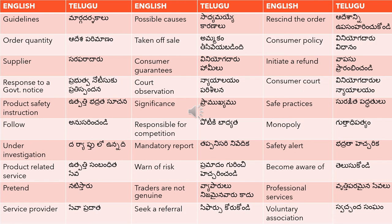'Monopoly' means 'guttidipattya' — that is when only one company tries to take up the whole market share and doesn't let any other company enter that market. 'Under investigation' means 'daryaptulo unnaadi'. 'Mandatory report' means 'tappansari nivedika'. 'Safety alert' means 'bhadrata hechcharika'.